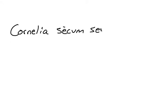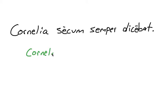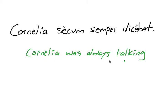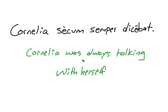And then finally, an ablative example. Cornelia secum semper dicebat — 'Cornelia was always talking with herself,' or you could say 'to herself.' Sometimes you could even make this dative and say sibi. Latin will use an ablative of accompaniment for this, or also an indirect object with dico sometimes. Either way is fine. Secum is the reflexive ablative, and of course the cum is enclitic, just like on first and second person pronouns.